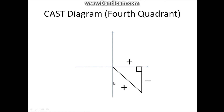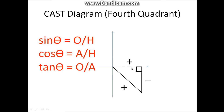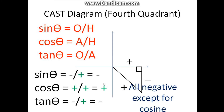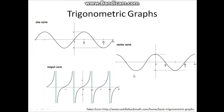For the fourth quadrant, between 270 degrees and 360 degrees — which means one full circle — the x-axis is finally positive but the y-axis is still negative, and therefore the opposite becomes negative. You just sub it in and only cosine theta becomes positive. So yeah, these are the trigonometric graphs.